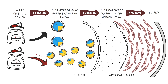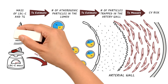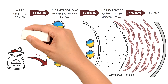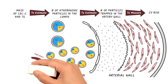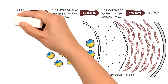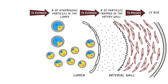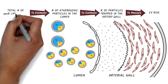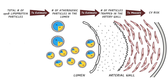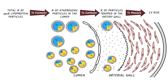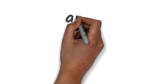It comes down to this: the most accurate way to estimate the number of atherogenic particles that could get trapped in the arterial wall is not the mass of triglycerides or cholesterol in the lumen, but the total number of ApoB lipoprotein particles in the lumen. The more particles there are in the lumen, the more particles are likely to be trapped in the artery wall.